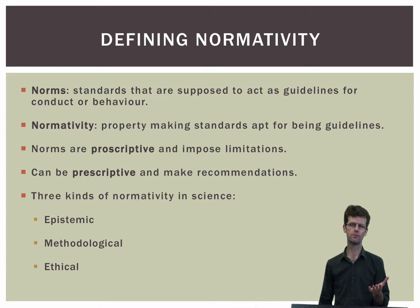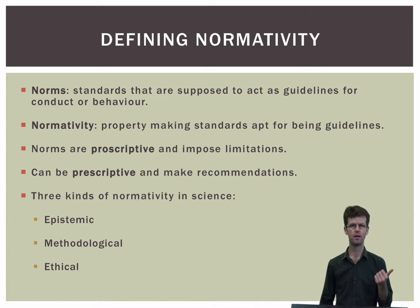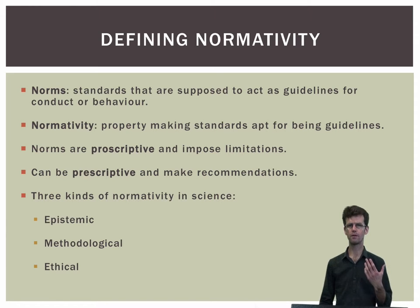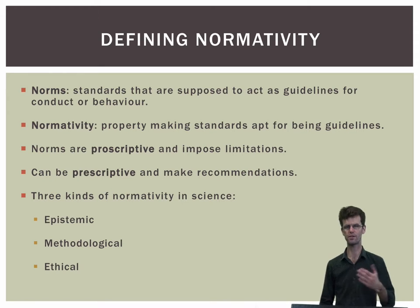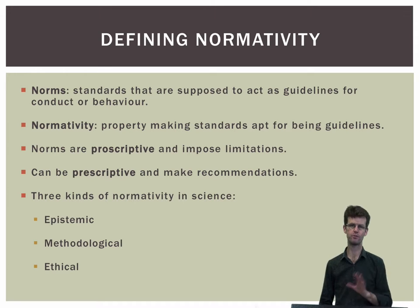Three kinds of normativity seem relevant to science: epistemic normativity, methodological, and ethical. In each case the relevant norms are best understood proscriptively as limiting science in various ways or along various dimensions. We should attend to each of these in turn with examples to illustrate.